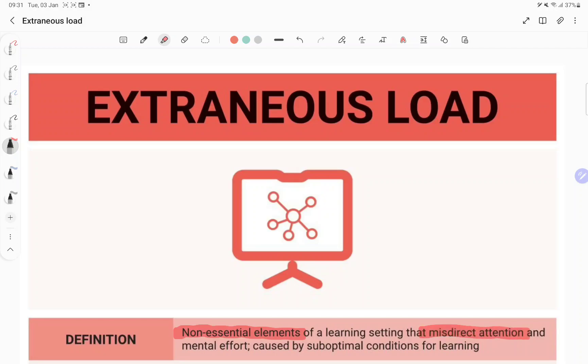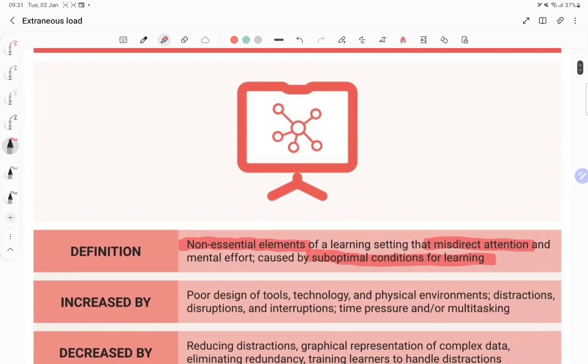And sometimes what can happen is these can misdirect attention. So instead of focusing on the topic, the learner is struggling to work out what it means and how it works. And it can be caused by suboptimal conditions of learning where the learning state is not ideal, where there's noise, distractions, extra things going on, all the things we know so well as a teacher and we know we have to try and eliminate as much as we can.